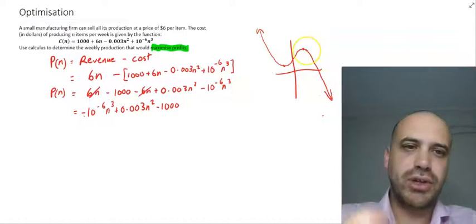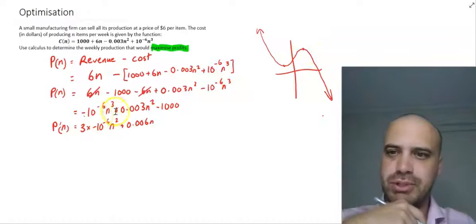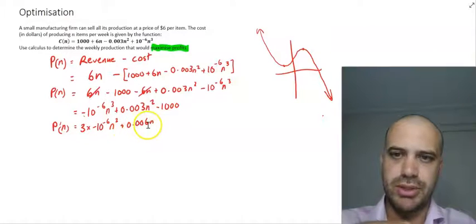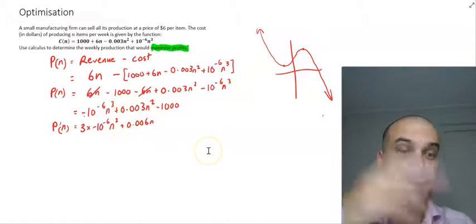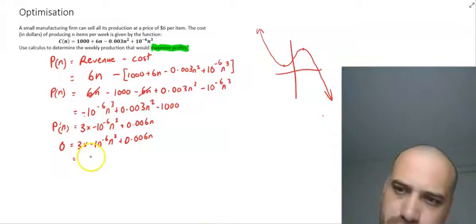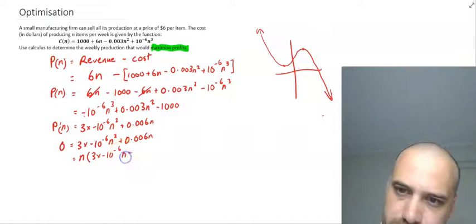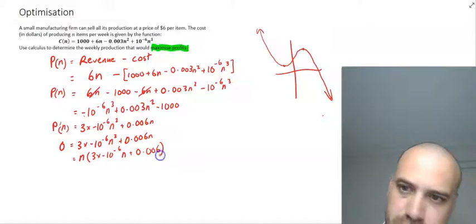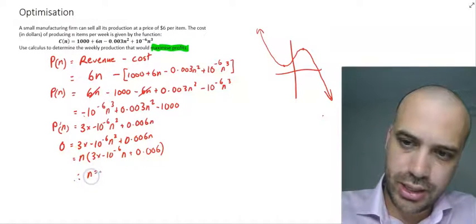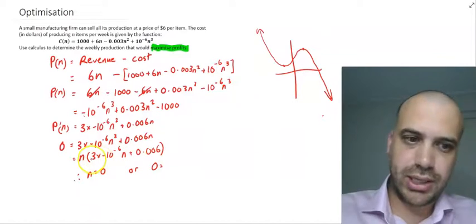So that's the kind of thing we're looking for. If we need to find turning points, we find the derivative. We let the derivative equal zero. Here's our derivative. I've just made it simple for myself by just putting the three out here, three times negative 10 to the negative 6. And then 0.06n because I'm multiplying by 2 there. Let it equal zero. And now I guess if I'm using a calculator, I can solve this. I'm going to do it a little more old school. Three times negative 10 to the negative 6, n plus 0.006. I've just taken n out as a common factor here. Therefore n equals zero or zero equals this thing in the brackets.